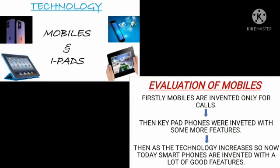What is the evolution of mobile phones? Mobile phones were first invented as early as the 1940s. Initially, mobile phones were only used for calls — you could only dial and receive calls with no other features. Then keyboard phones were invented, which could only be used with physical keys. As technology increased, smartphones were invented.